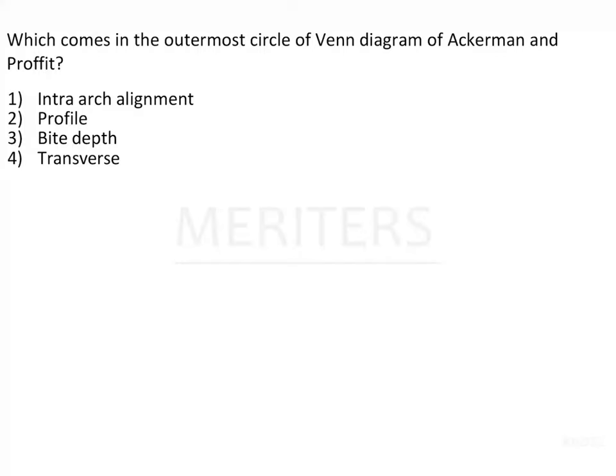The question is: which comes in the outermost circle of the Venn diagram of Ackermann and Proffitt? This question is regarding the Ackermann and Proffitt's classification of malocclusion.